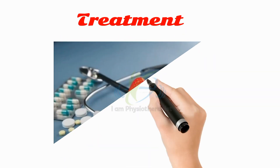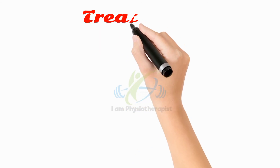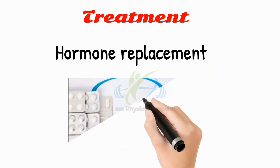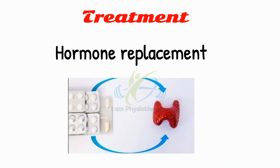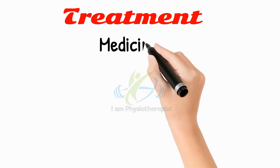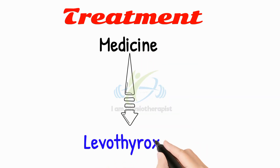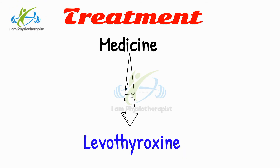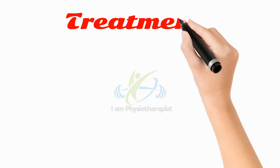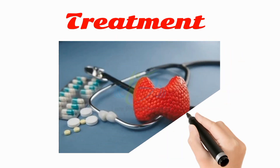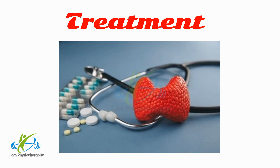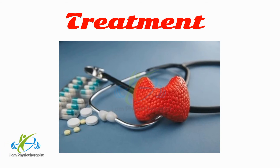In most cases, hypothyroidism is treated by replacing the amount of hormone that your thyroid is no longer making. This is typically done with medication. One commonly used medication is levothyroxine. Hypothyroidism is a manageable disease; however, you will need to continuously take medication to normalize hormone levels for the rest of your life. With careful management and follow-up appointments with your healthcare provider, you can lead a normal and healthy life.